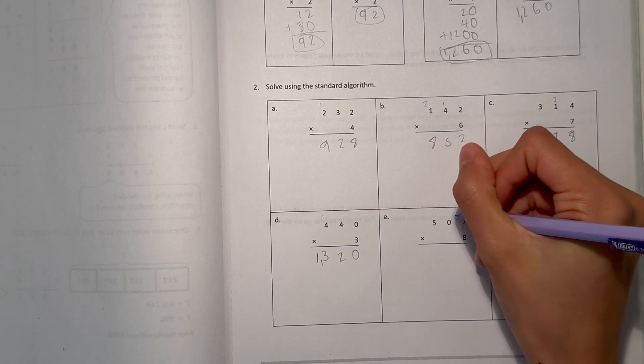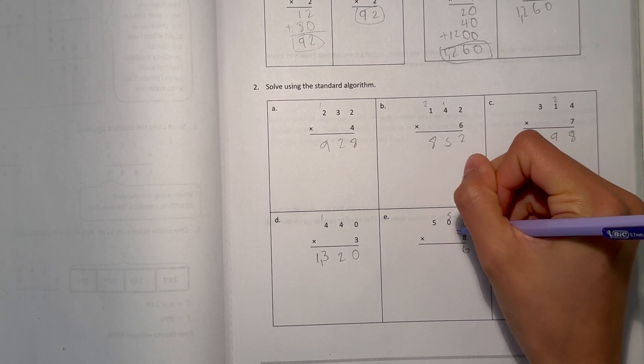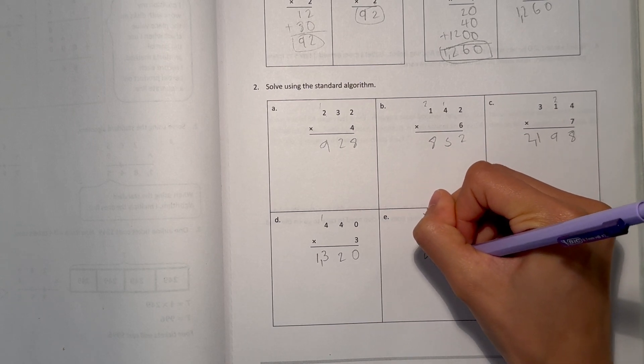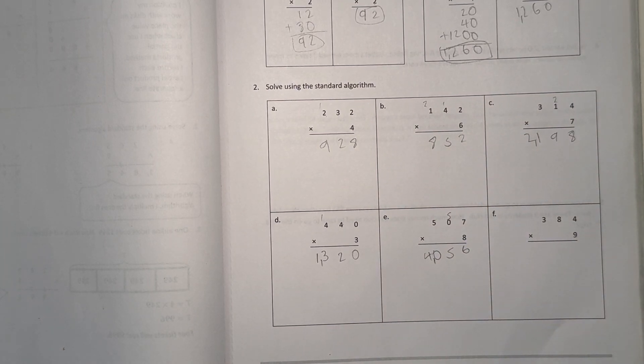E, 7 times 8 is 56, 0 times 8 is 0, plus 5 is 5, and 5 times 8 is 40. So our answer is 4,056.